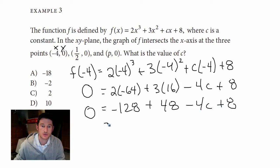And I'll just use a calculator to speed this up. -128 + 48 + 8 equals -72. So -72 - 4c still equals zero.